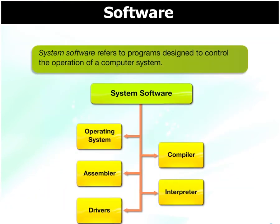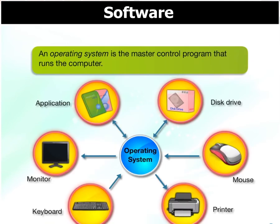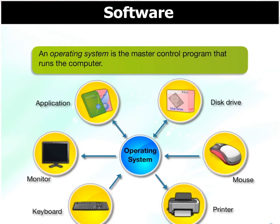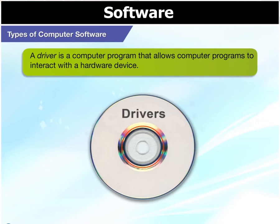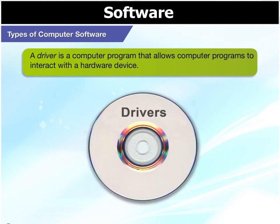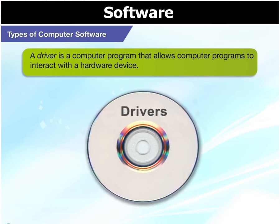System software refers to programs designed to control the operation of a computer system. Operating systems, compilers, assemblers, interpreters, and drivers are all system software. An operating system is the master control program that runs the computer. A driver is a computer program that enables computer programs to interact with a hardware device. You may have seen a driver being installed when you plug in a pen drive for the first time.